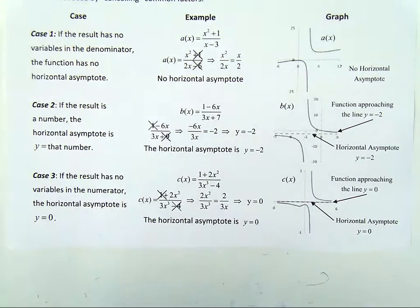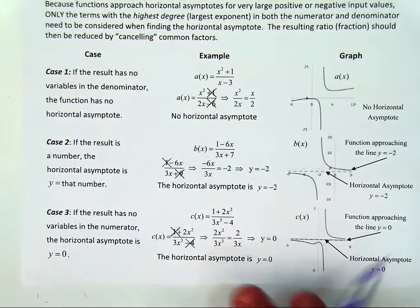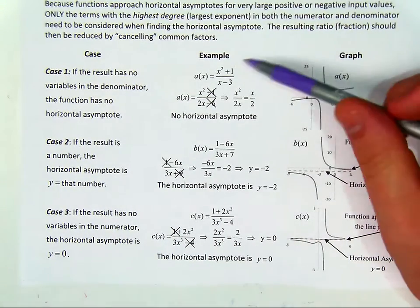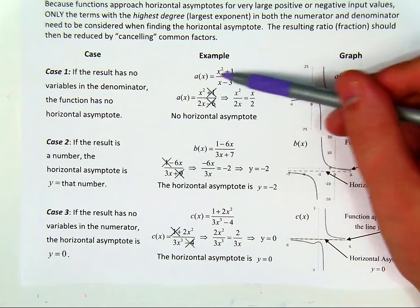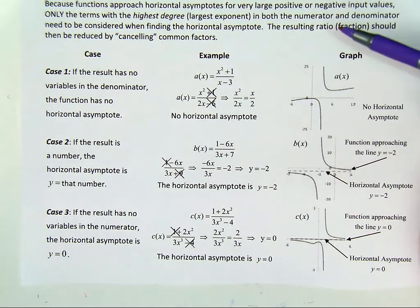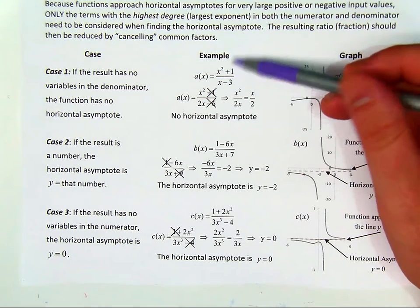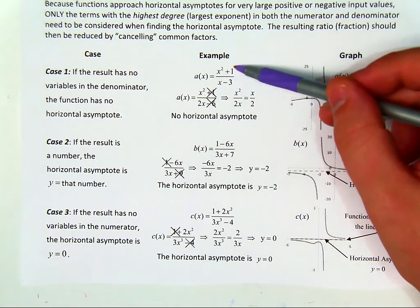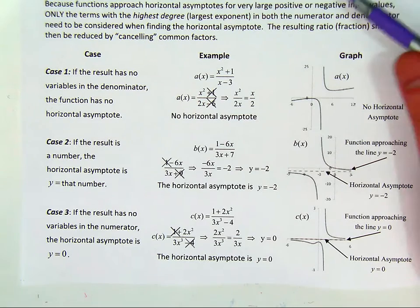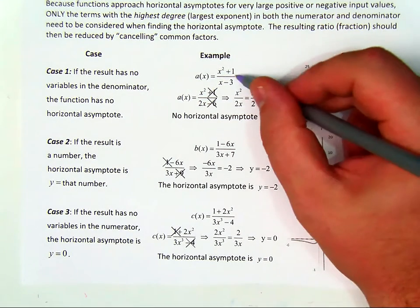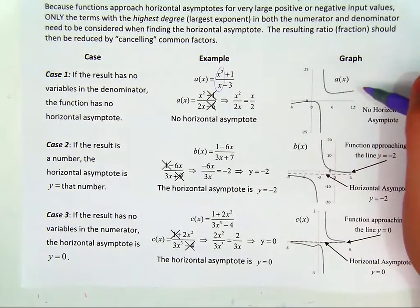Because horizontal asymptotes deal with what happens as x approaches infinity, you want to think about plugging in numbers that are very large into x and think about what would happen to y. There are going to be three cases. Let's take a look at this function right here. If I plugged in very large numbers for x, the plus 1 and the minus 3 wouldn't mean anything. So in this case you're going to get just x squared over x mattering when I plug in very large numbers.